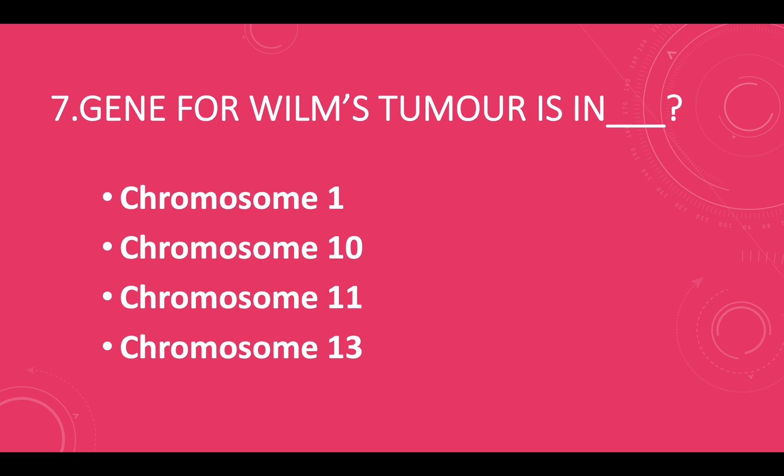Wilms' tumor is on which chromosome? Option A — chromosome 1, option B — chromosome 10, option C — chromosome 11, option D — chromosome 13.